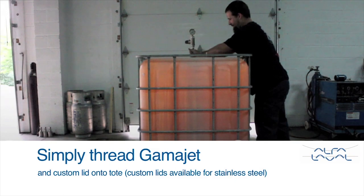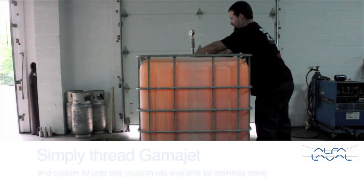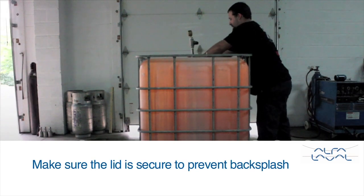It's important to make sure the lid is tight to avoid leakage or backsplash. Once the GammaJet is secured, the hose provided with the system can be connected.